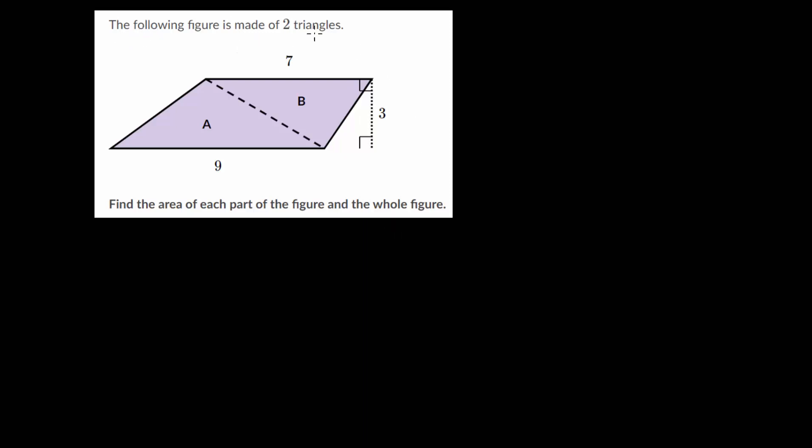The following figure is made up of these two triangles, A and B, and we need to find the area of each part of the figure and the whole figure.